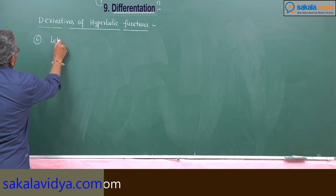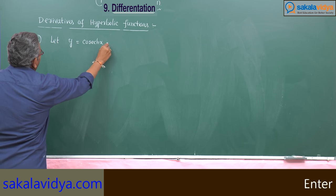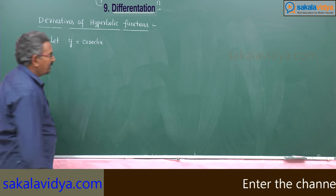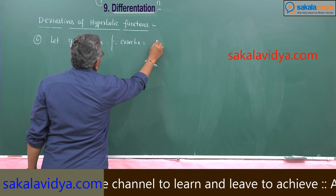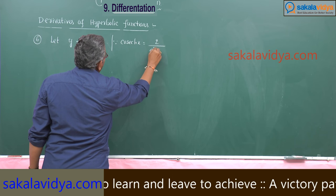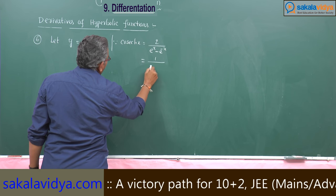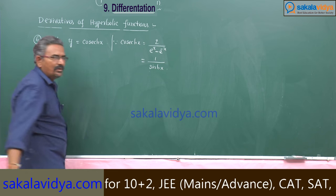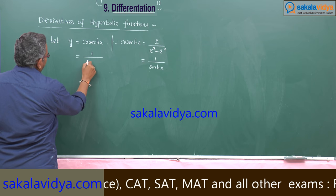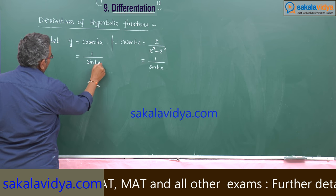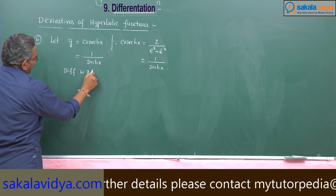Let y be equal to cosecant hx from hyperbolic functions. Cosecant hx is equal to 2 divided by e to the power x minus e to the power minus x. This is nothing but 1 by sinh x. Now this can be written as 1 by sinh x — differentiate with respect to x.